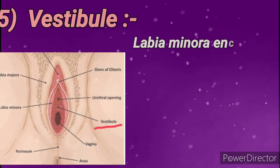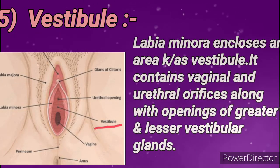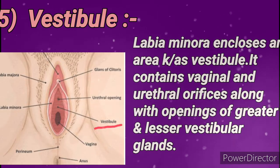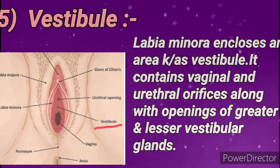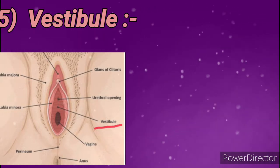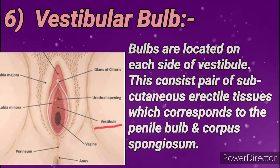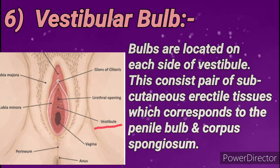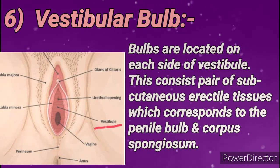Next is vestibule — it is an area enclosed by labia minora. The vestibule contains the vaginal opening, urethral opening, along with the openings of greater and lesser vestibular glands. Vestibular bulbs are located on each side of the vestibule, made up of subcutaneous erectile tissue, which correspond to the penile bulb and corpus spongiosum.